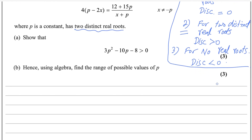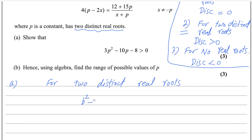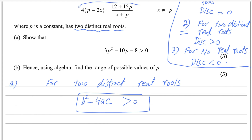I will start the first part of the question. For two distinct real roots, discriminant b squared minus 4ac should be greater than 0. To figure out what b, a, and c are, you have to simplify the given equation.